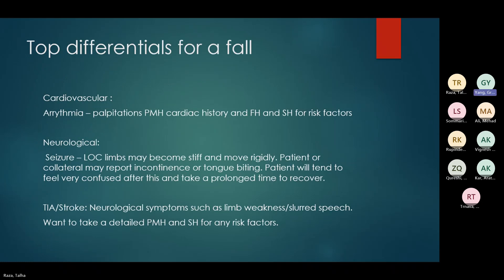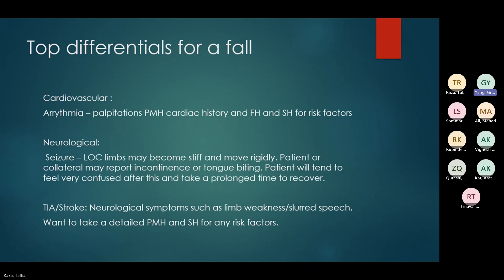For cardiovascular falls, the most likely differential is an arrhythmia — the patient will have had palpitations, possibly previous similar episodes without a fall. Screen for cardiovascular risk factors. For neurological falls, it's usually a seizure — loss of consciousness, they may not remember what happened, they may become stiff and rigid, and a witness is likely. After the fall, they'll be very confused for a while. Also screen for strokes: ask about limb weakness or slurred speech. Take a very detailed past medical history.